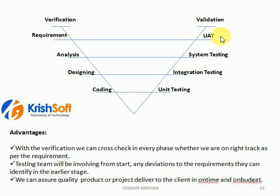While the UAT people are writing the scenarios and test cases, if they come across any requirement that is not clear, or a requirement that is wrongly updated, or the client is expecting something else and the requirement says something else — easily we can identify any gaps in the requirements phase, if we are doing UAT-related scenarios and test cases in parallel.